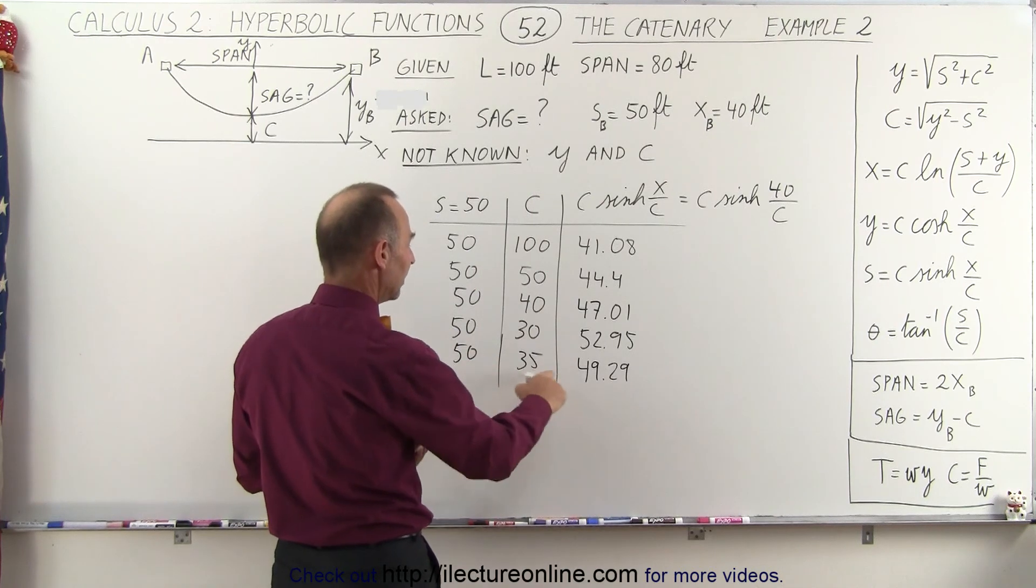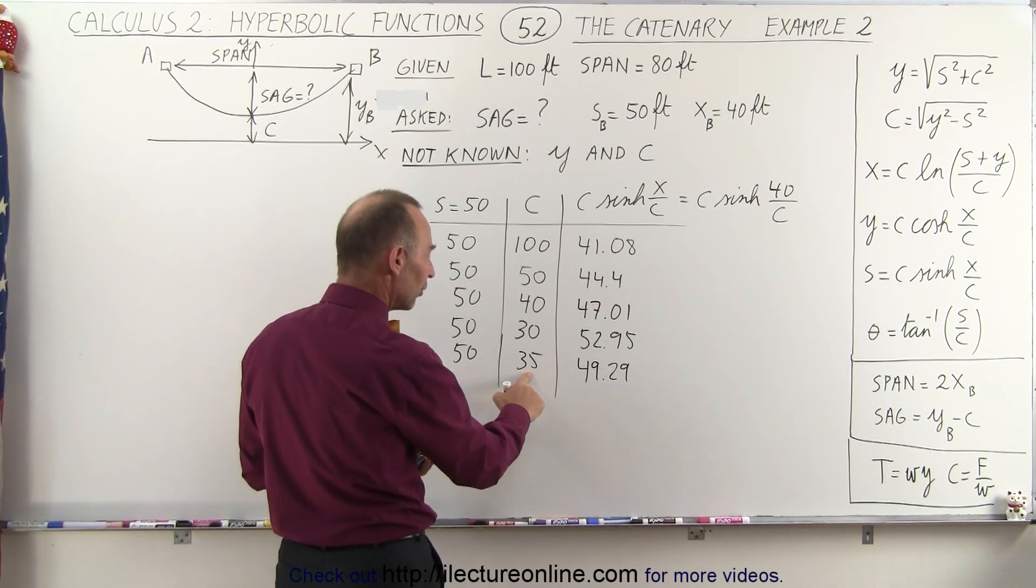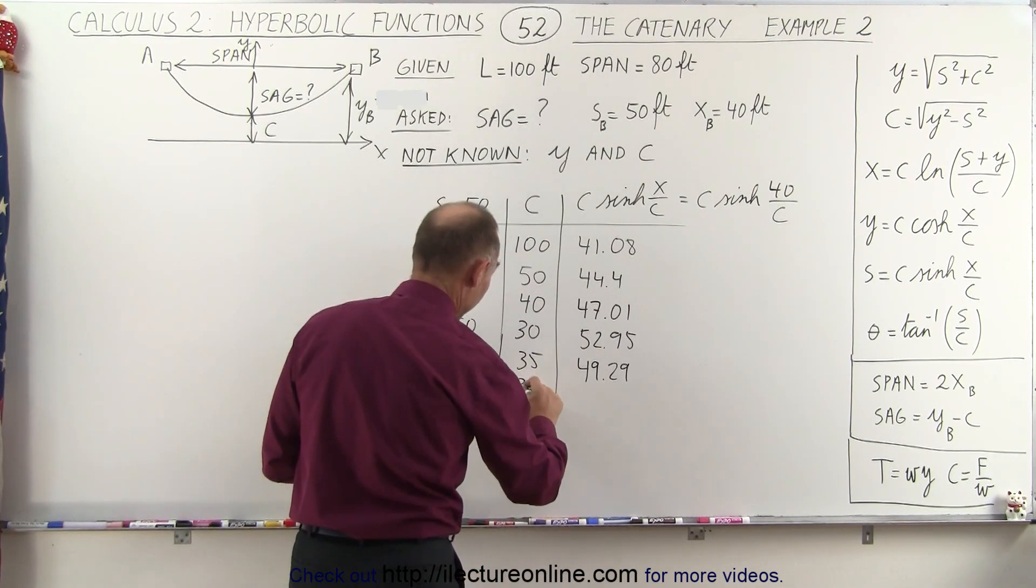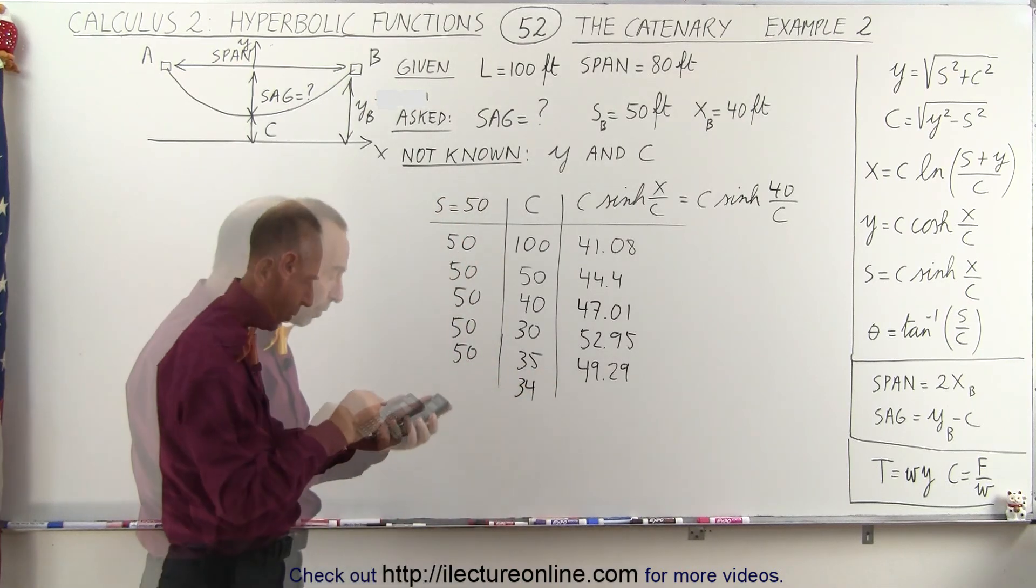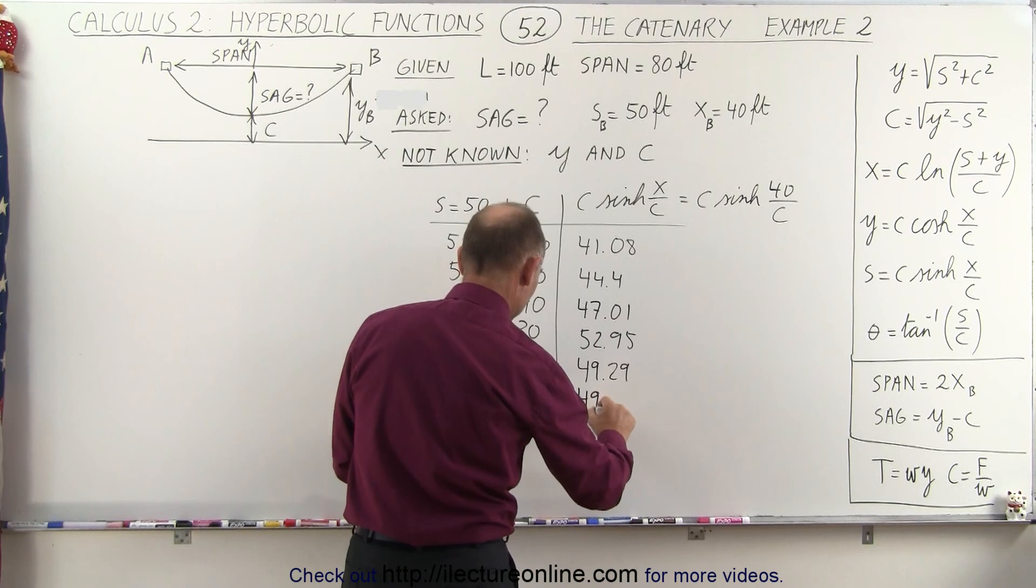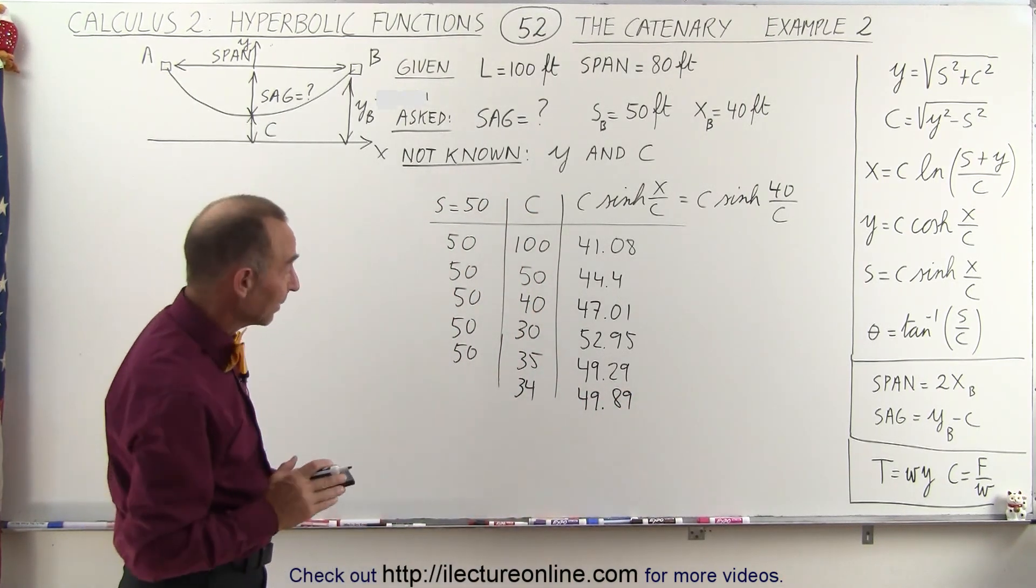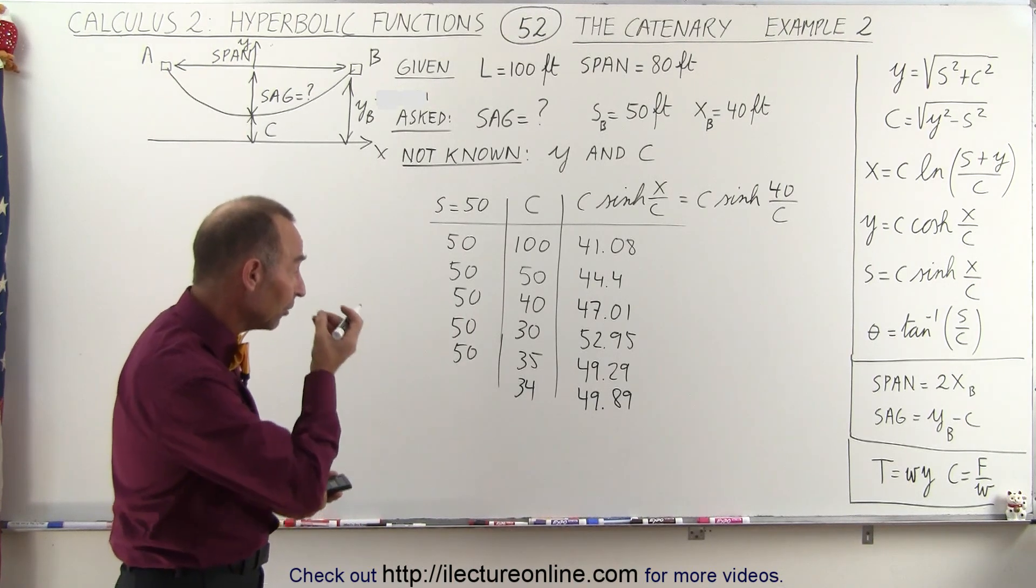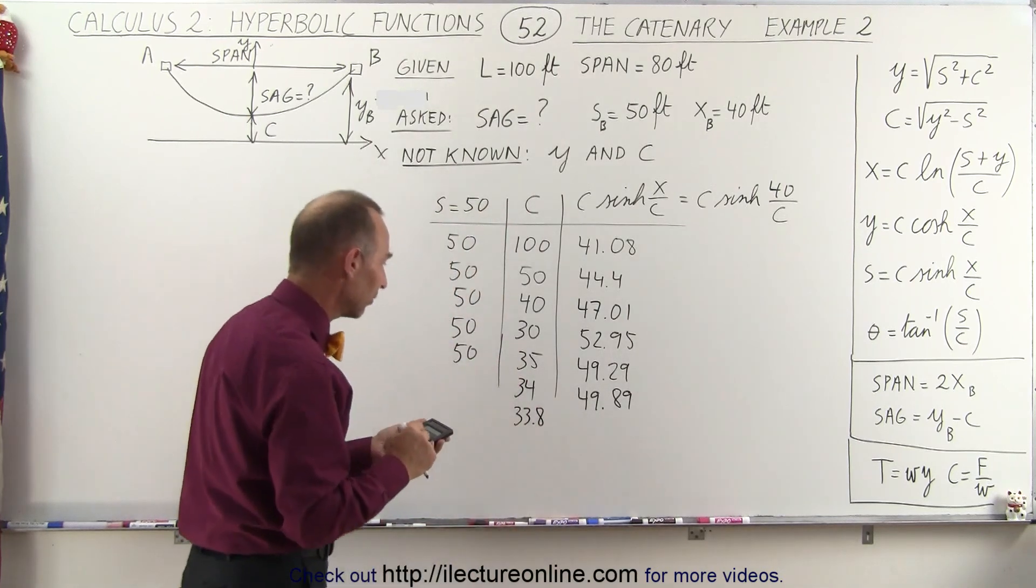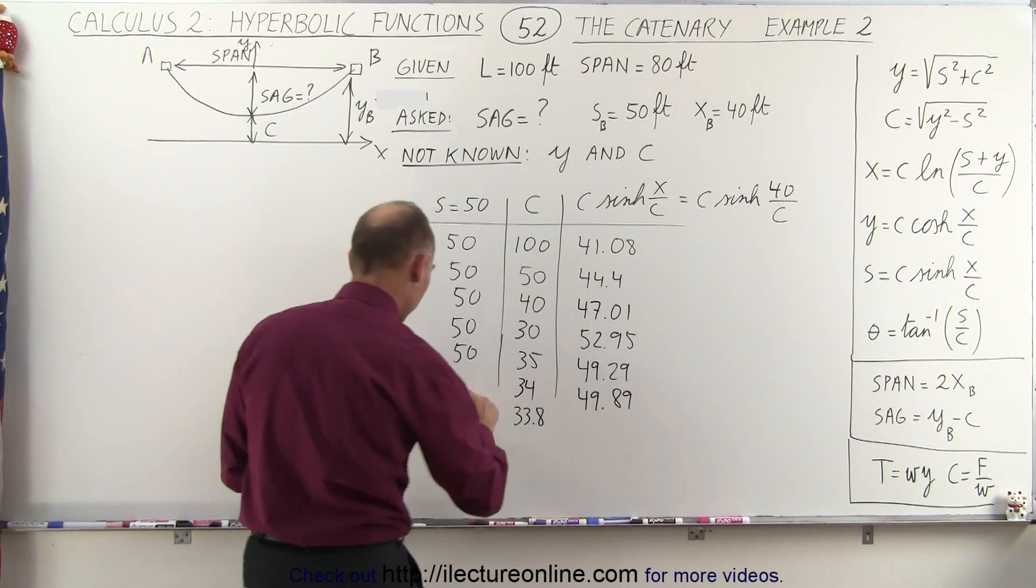So we're not quite at 50 yet. So let's see, we need to be a little bit smaller than 35 because 30 is bigger, 35 is smaller. So how about 34? And now we get 49.89. So we're getting really close but not quite there yet. So maybe the next value you want to be a little smaller. How about 33.8? Let's see what that does for us.